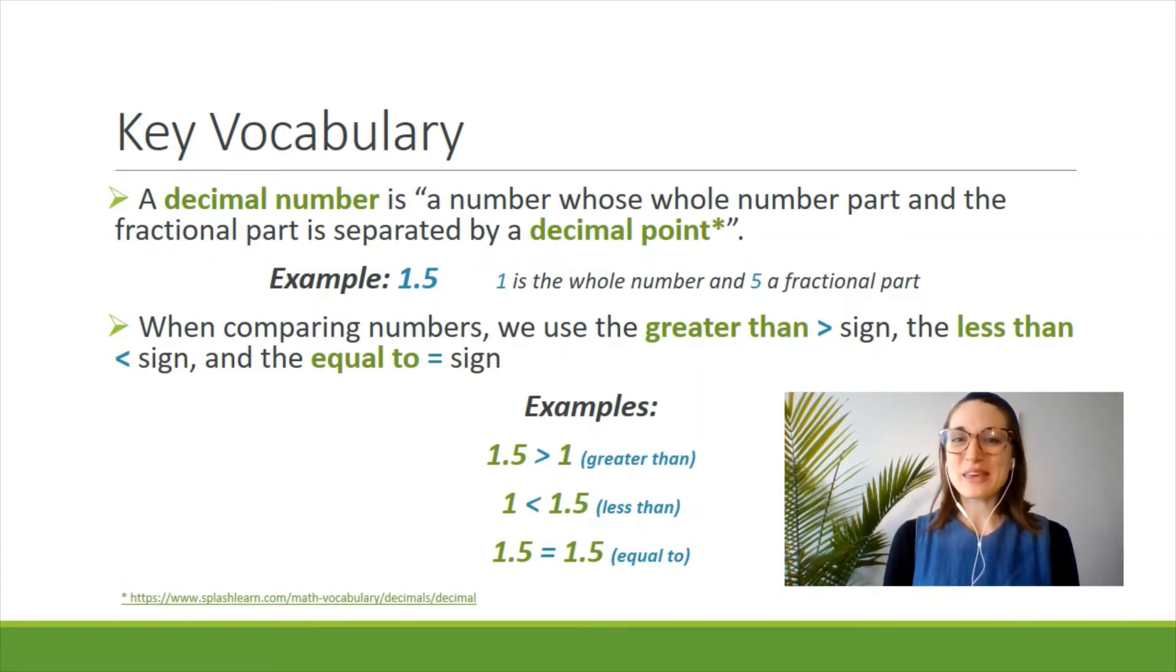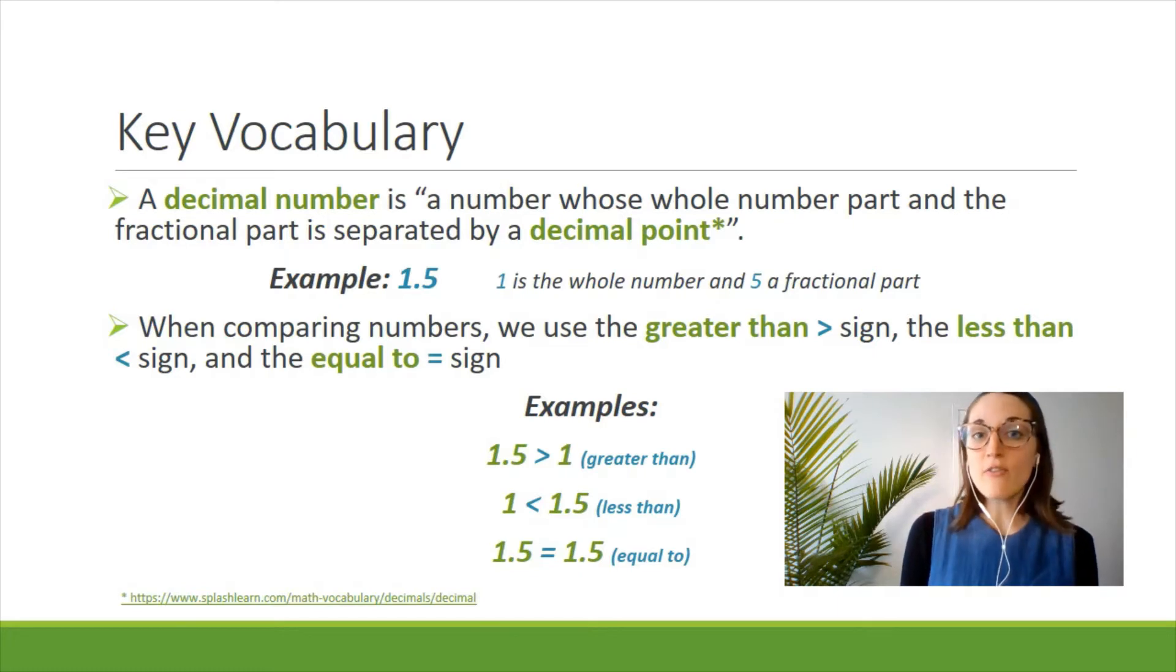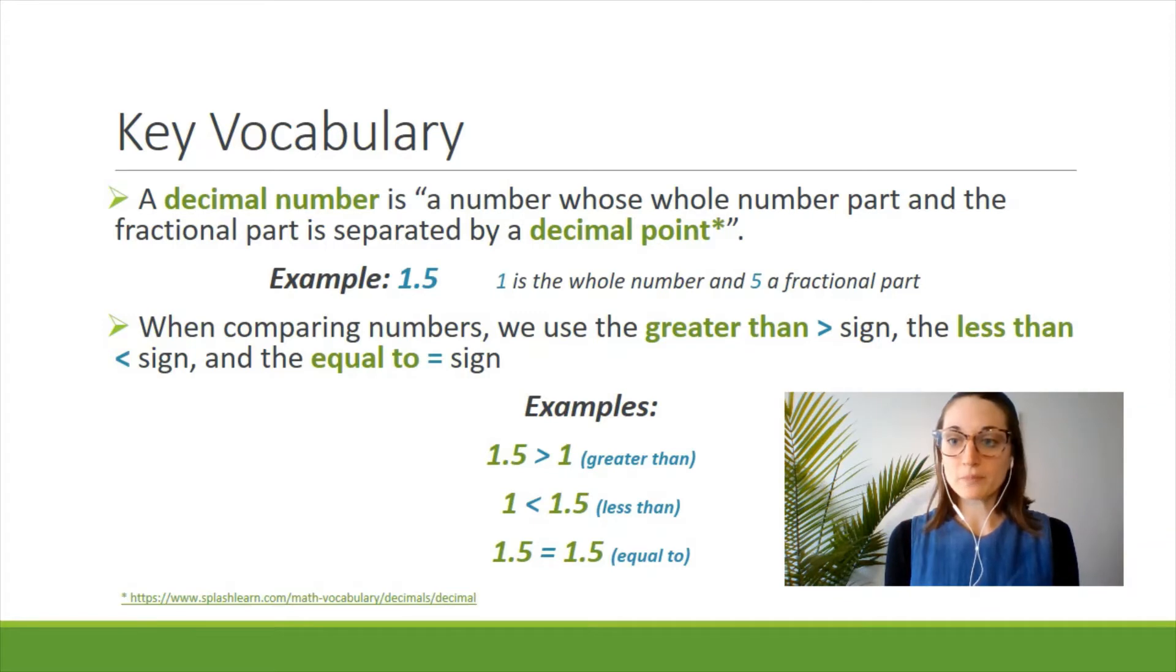Let's start with some key vocabulary. A decimal number is a number whose whole number part and fractional part is separated by a decimal point. For example, let's look at the number 1.5. One is the whole number portion and the five comes after the decimal, so it represents only part of a whole number. Anything to the left of the decimal is a whole number and anything to the right is only a part of a whole number.